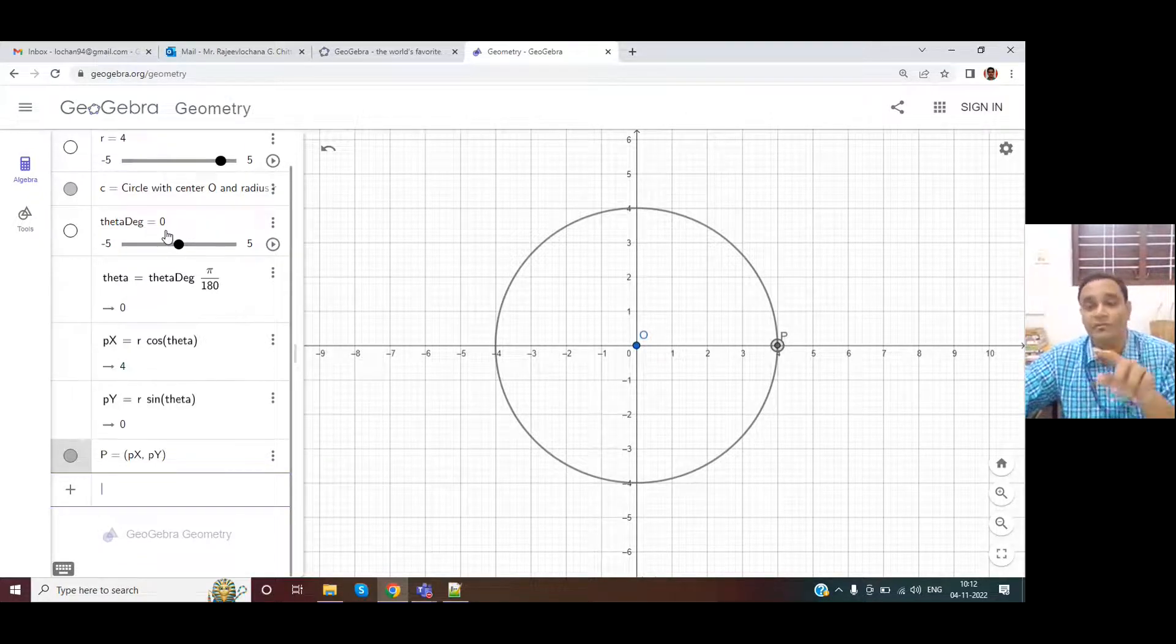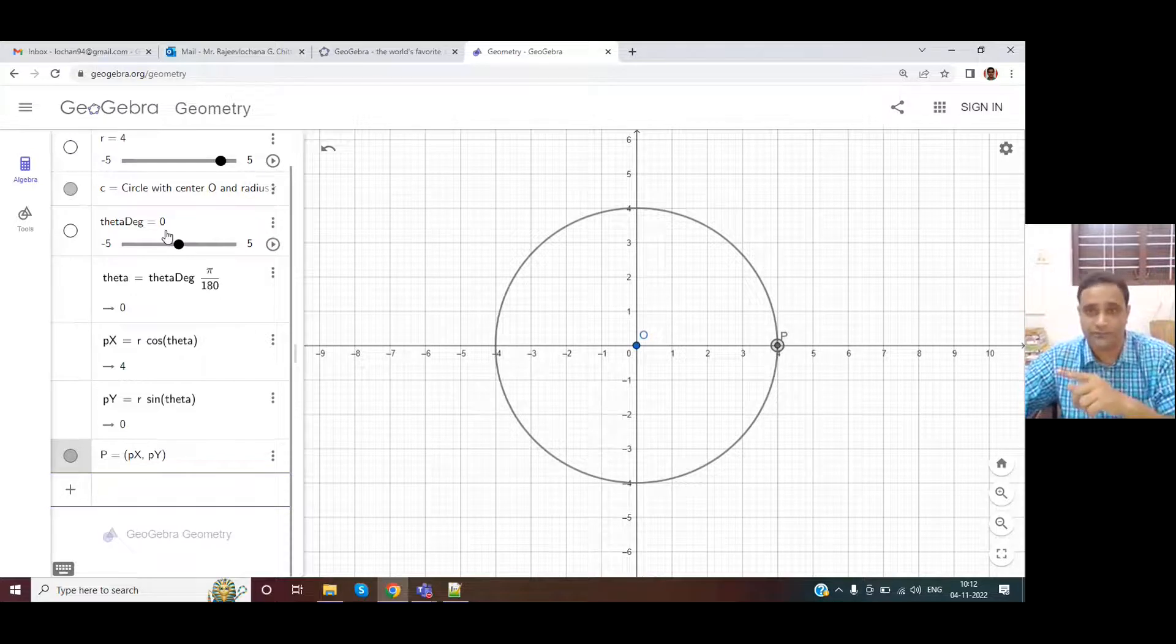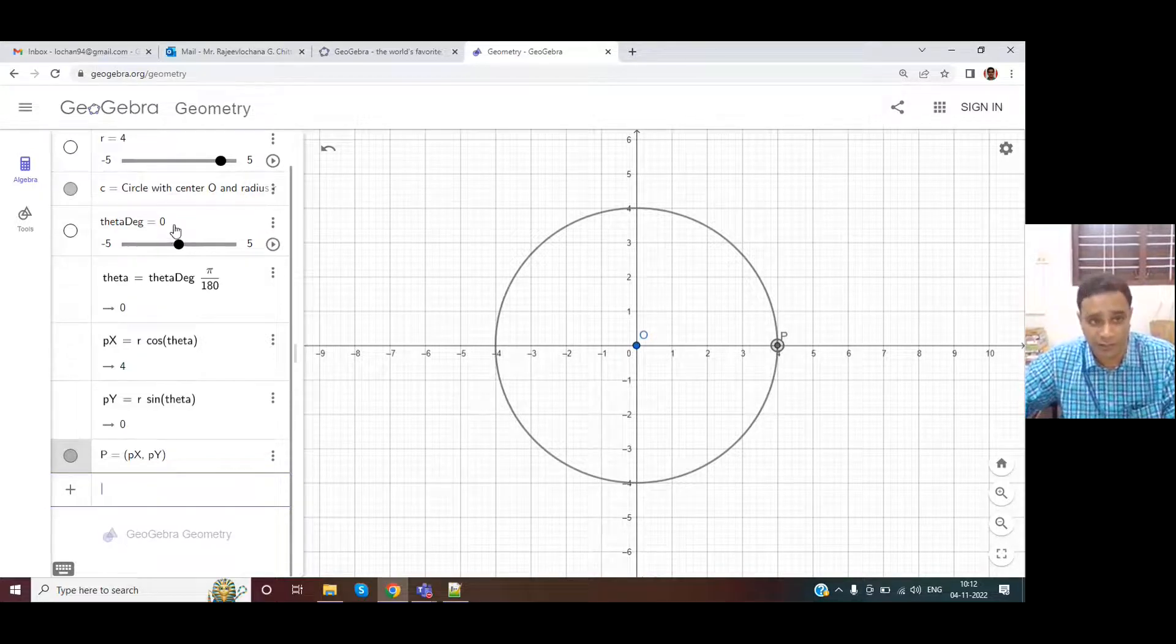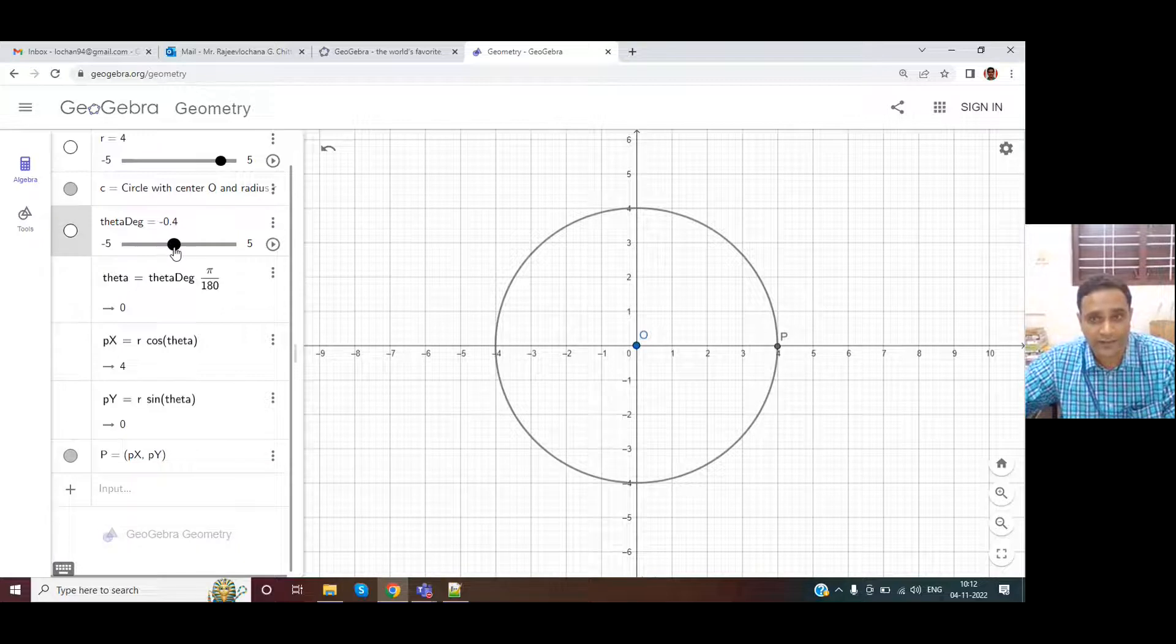Now, what if we want to show an animation of this point P on the circle? So that is something we'll be doing now. I can change the value of theta degree. You can see here the point P is moving on top of this circle.